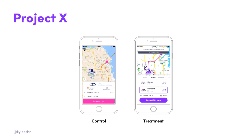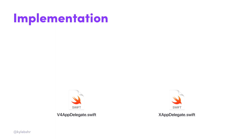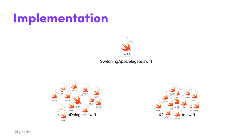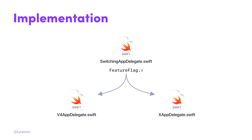And you're probably thinking, no, they didn't. Well, yes, we did. We had not one, not two, but three app delegates in our app. Two of which led to entirely different projects — the V4 application and Project X — and one of which implemented every single delegate method and, based on the feature flag, would forward to the correct implementation.